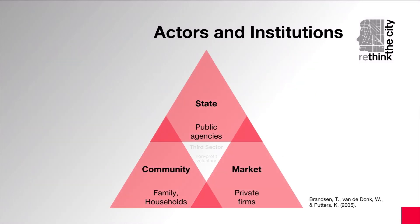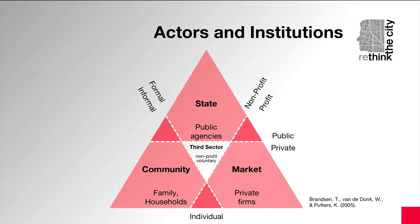Housing policies require the participation of different actors and institutions. We can identify four types of actors or institutions that play important roles in the production and management of housing in most countries. This triangle diagram shows at the top the state or government actors. On your right, the market or commercial actors. On your left, community actors. Community actors include cooperatives and other self-organized groups of households that work together to provide housing for and by themselves.